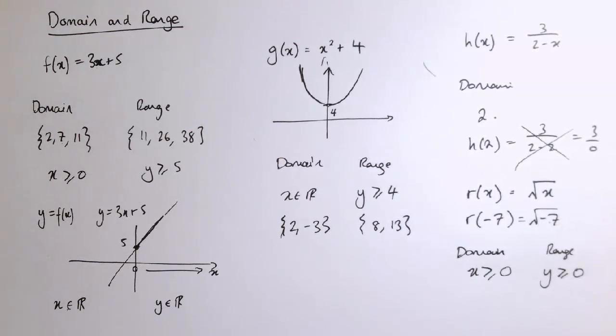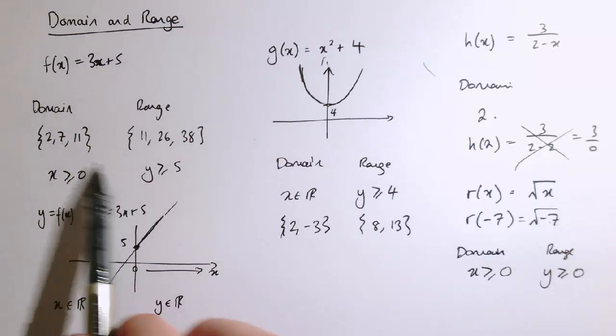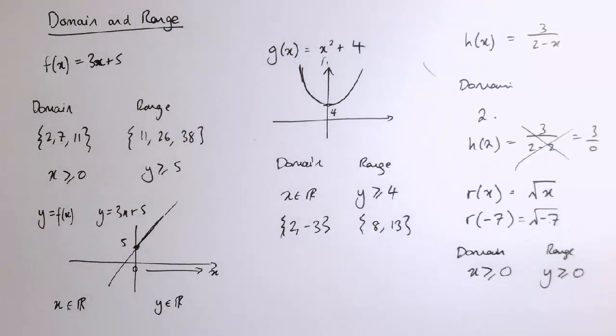That's the domain and the range. The domain is the set of inputs, the range is the set of outputs, and we can work out one from the other either by actually substituting in values and thinking about it, or perhaps by sketching a graph.